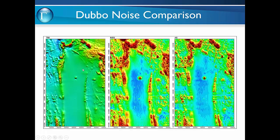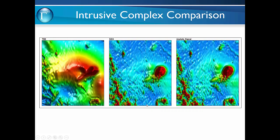It really starts to show its advantage when you get down to details, particularly in quiet areas. We have this basin in the total magnetic intensity, and there's reasonable coherence throughout the basin in the normalised source strength, but you see it start to break up in the analytic signal. Continuity is generally better in the normalised source strength. Here's an example from an intrusive complex — not a huge difference between the two, but generally speaking the continuity for the normalised source strength is seen to be better.